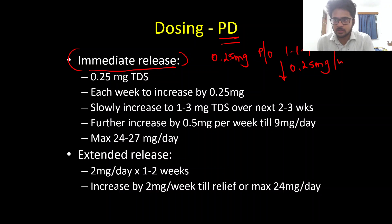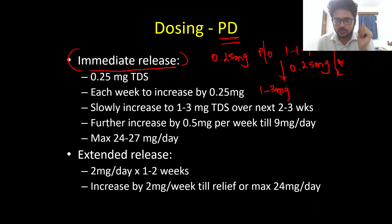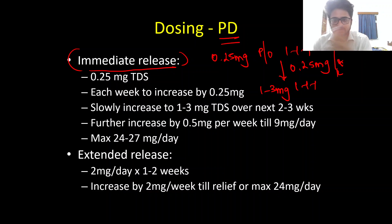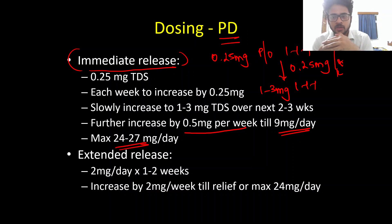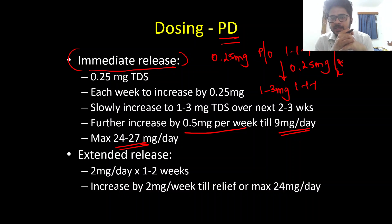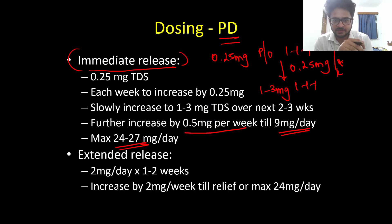We then increase the dose by 0.25 mg per week until we reach a target dose of 1 to 3 mg three times per day, achieved over the next two to three weeks. Further increases after this should be done at 0.5 mg per week until we reach 9 mg per day. The actual maximum dose can go up to 24 to 27 mg per day. To summarize: start at 0.25 mg TDS, increase by 0.25 mg weekly to 1–3 mg TDS, then increase by 0.5 mg per week to 9 mg/day, and up to 24–27 mg/day maximum.